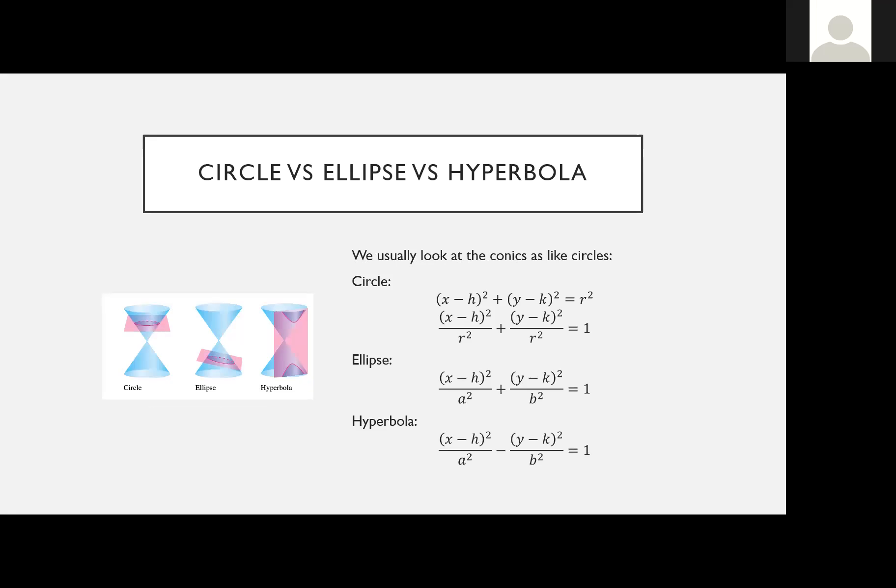Our equation forms are all similar to the form of a circle. With a double cone — one inverted — a circle is a horizontal cross section, the ellipse is a slanted cross section through one cone, and the hyperbola is a vertical cross section through both. The equation of a circle is (x−h)² + (y−k)² = r², and dividing both sides by r² gives a form very similar to the ellipse.